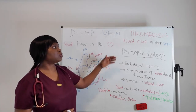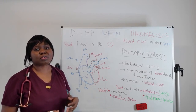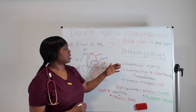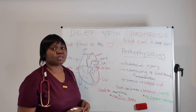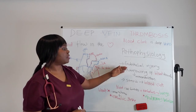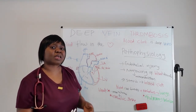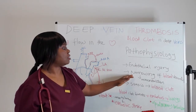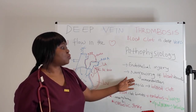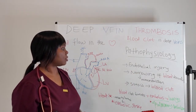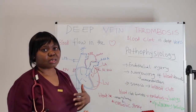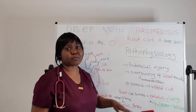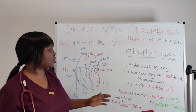Now let's look at the pathophysiology of DVT — what causes a blood clot to form in the deep veins. It often starts with endothelial injury: the lining of the blood vessel is injured, for example when an IV line punctures the vein. This can cause narrowing and vessel constriction, leading to stasis where blood slows down and a clot eventually forms. If that clot breaks off, it becomes dangerous.